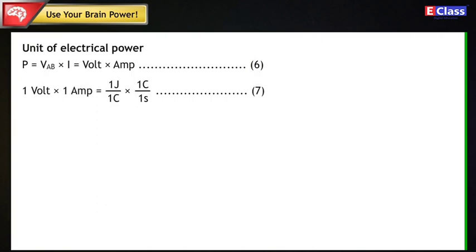Unit of electrical power: P = VAB×I = VAB×I = Volt×Ampere (Statement 6). 1 Volt×1 Ampere = 1J/1C × 1C/1S.